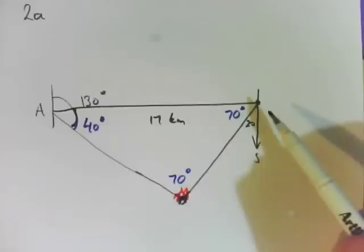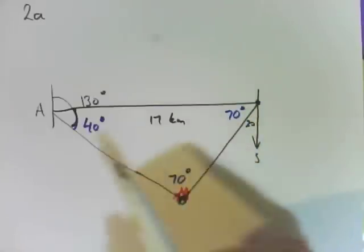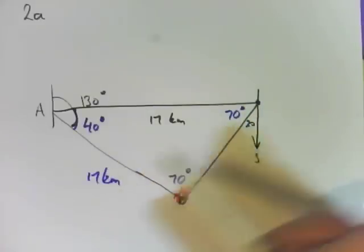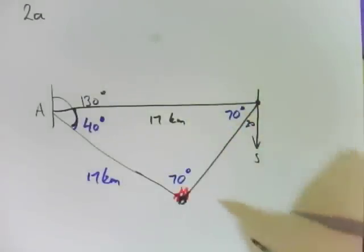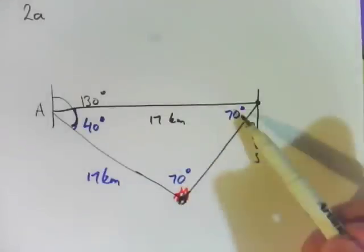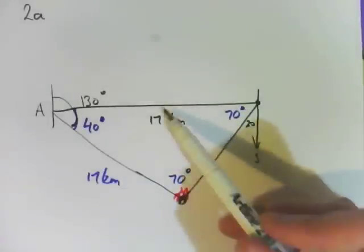Which means that we could cheat a little bit and say, well, this one is 17 kilometers because clearly this is an isosceles triangle. It might not look like it, but it is because these two angles are the same, which means these two sides are the same.